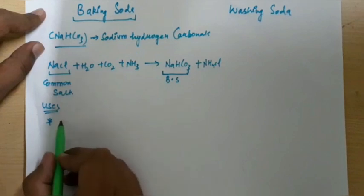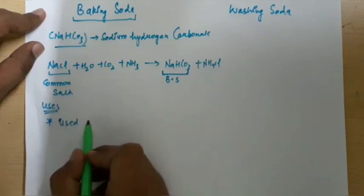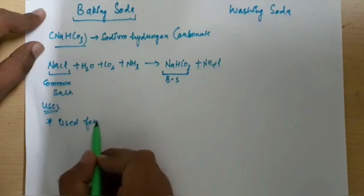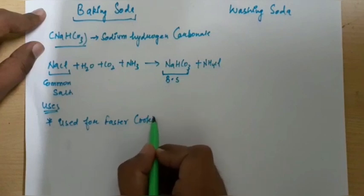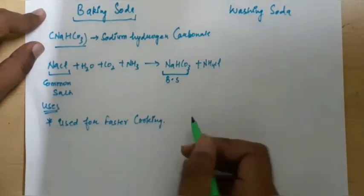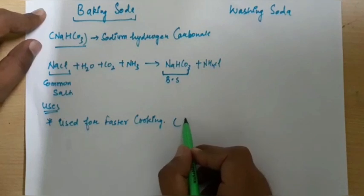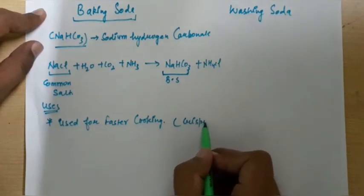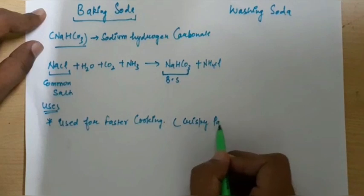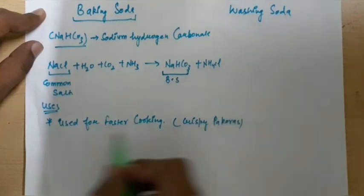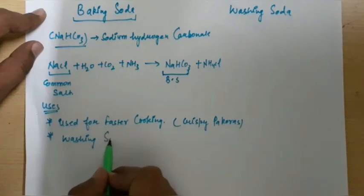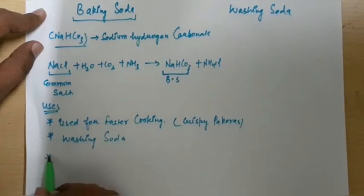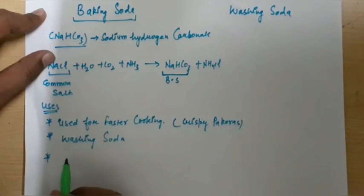The very first one is used for faster cooking, like for the formation of crispy pakoras. Also used for the formation of washing soda. And the third one is it is used in the preparation of baking powder.